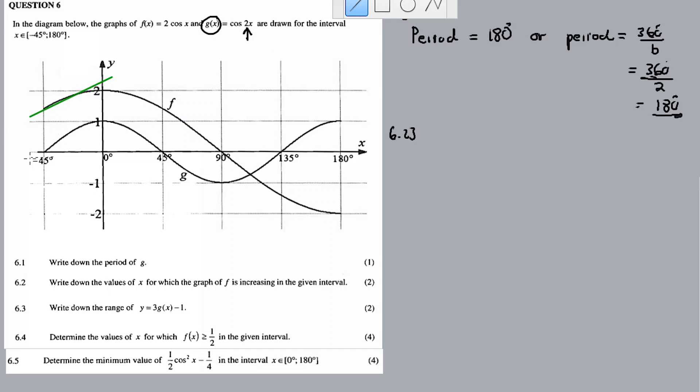So the answer here is somewhere between negative 45 degrees. Remember, it's the values of x for which the graph of f is increasing. Now f, this is the graph of f. It's increasing from negative 45 until 0 degrees. After 0 degrees it starts going down. So the answer here should be x is between minus 45 degrees less than x less than 0 degrees. This is the increasing interval.